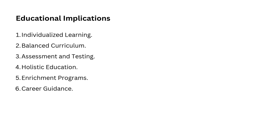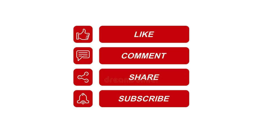Number six: career guidance. Understanding a student's specific abilities can help in providing career advice that aligns with their strengths. For example, a student with a high S-factor in artistic skills might be encouraged to pursue a career in design or fine arts, while someone with a high S-factor in analytical thinking might be guided towards engineering or science. That was all on today's class on Spearman's two-factor theory of intelligence. Please let me know in the comment section what you think, and mention any topics of education you would like me to cover in upcoming classes. Thank you for watching, and see you in the next class.